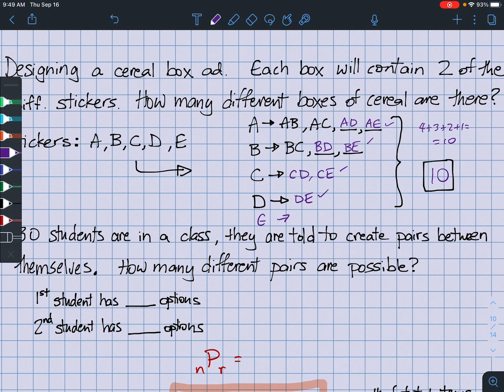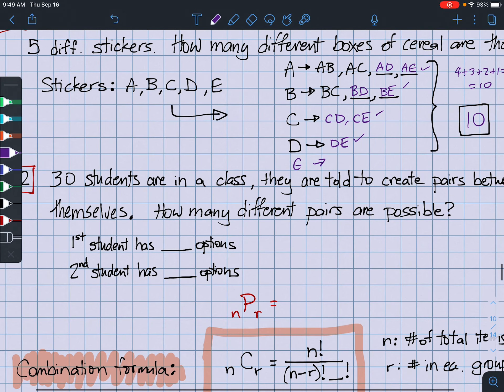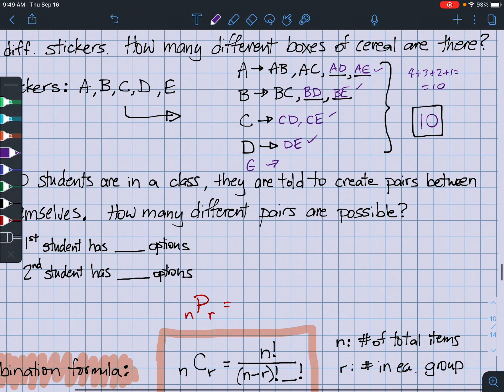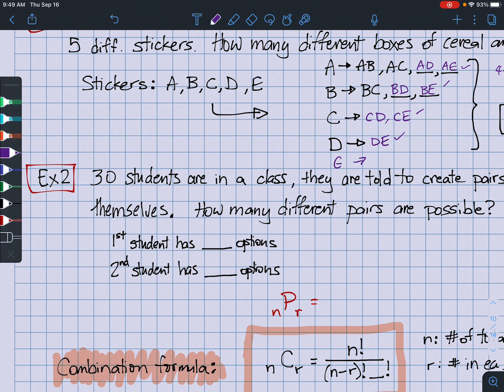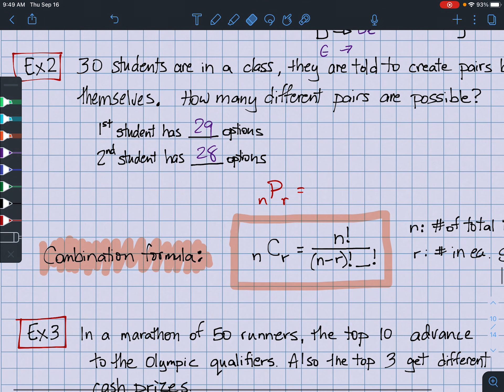Let's start with looking at 30, 30 students instead of five stickers. Okay, example two. They're told to create pairs between themselves. How many different pairs are possible? Well, we know that the first student, again here, would have 29 options. The second student would only have 28. And so on and so forth down the list. So again, this is kind of tough. So this raises the idea of, we need a formula to be able to do this.